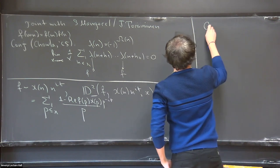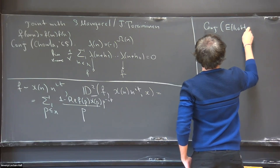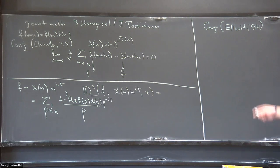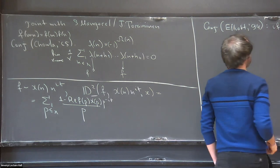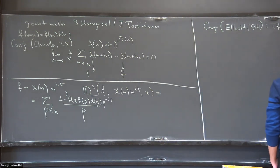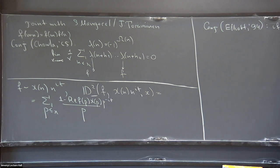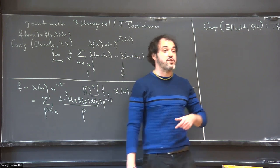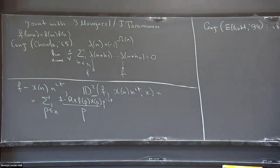In this language of distance, the Elliott conjecture from 1994 states: if f is aperiodic — meaning it is far from any character times n to the i·t, i.e., for every t and chi the distance between f and n^{it}·chi is infinity — then all the correlations vanish. An equivalent formulation using the Halász machinery is that on every arithmetic progression your mean value is zero.